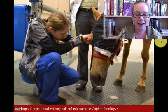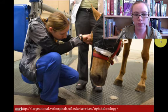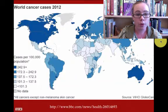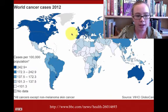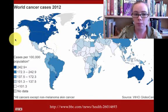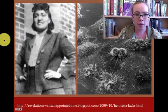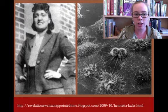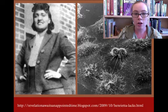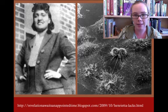Animals can get cancer, like this horse that had an eye cancer that must be worked on through surgery to remove. Here are the world cancer rates in 2012 — we can see in the United States we have over 242 cases per 100,000 people. Henrietta Lacks is one of the pioneers in cancer research; she had cervical cancer and donated cancer cells which have been growing since the 1950s because, being cancer, they haven't died.